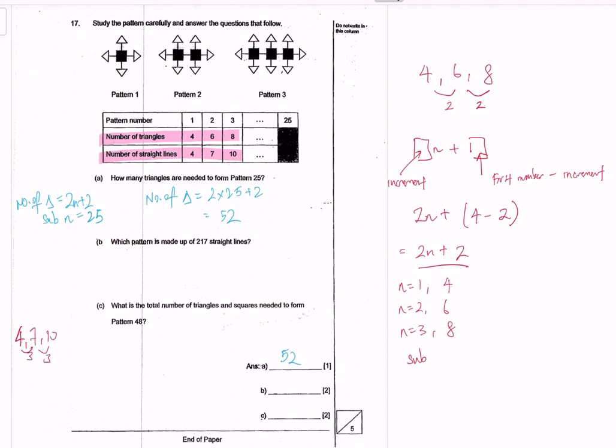The increment is 3, right? So first value would be 3n plus, first number is 4 minus the increment is 3. So this pattern follows the equation 3n plus 1. It follows 3n plus 1.